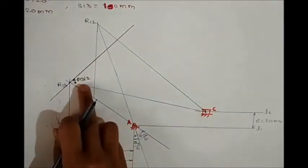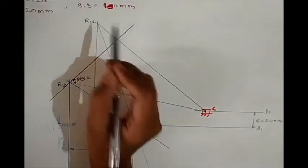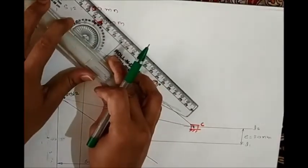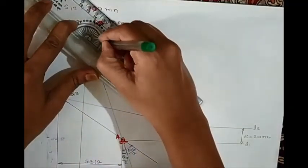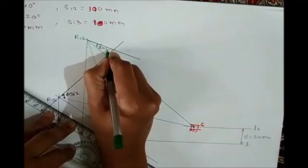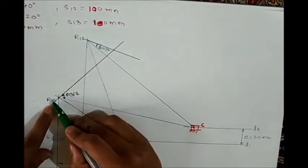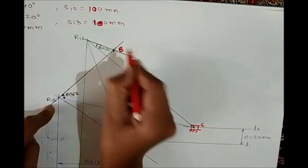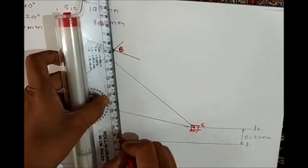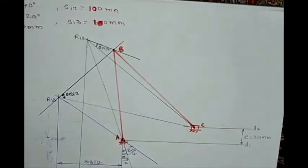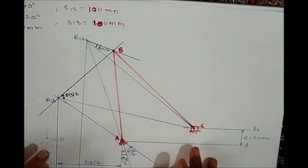Similarly, from line C-R12, draw a line taking an angle equal to theta 1-2 by 2, which is 20 degrees. Both of these arbitrary lines from the relative poles meet at one point — that point is B. Now join A to B and B to C to complete the mechanism.